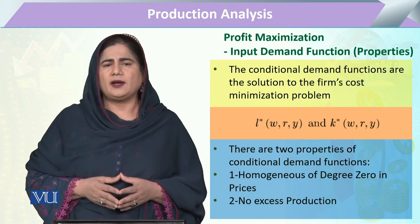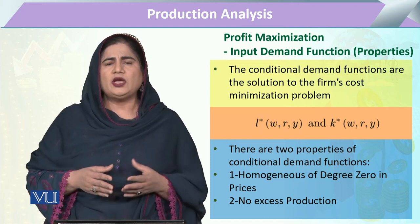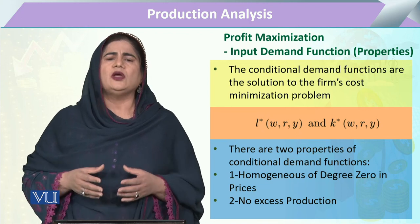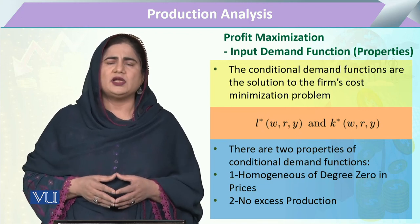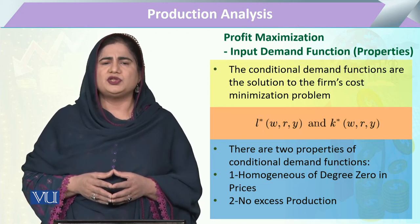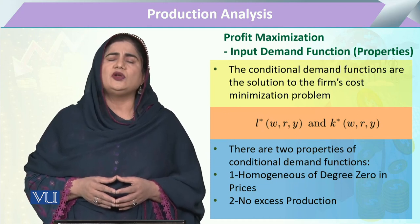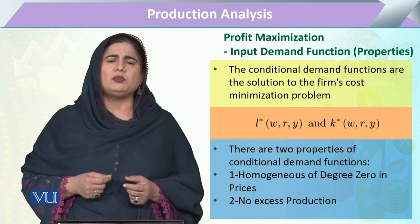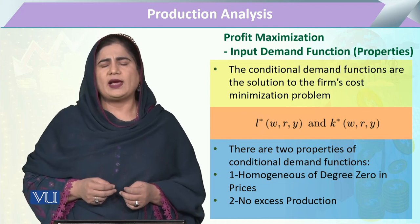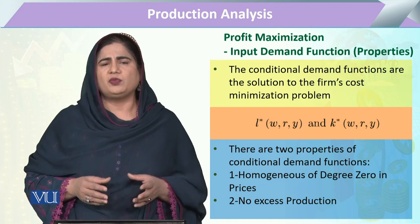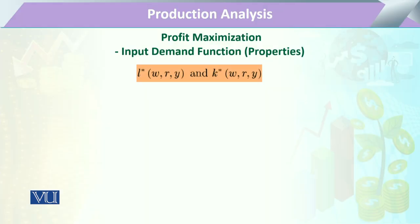Now we look at the two properties of the inputs for output maximization. Property one: the inputs will be homogeneous of degree zero. Property two: there should be no excess production. We will now explain precisely why these two properties must be followed.